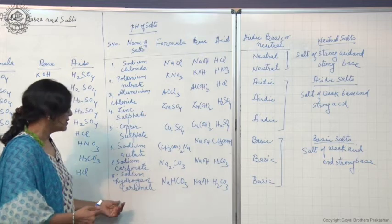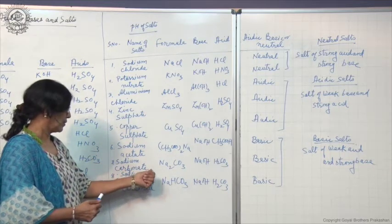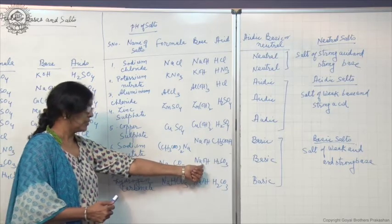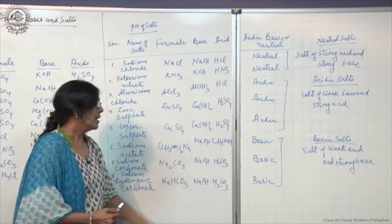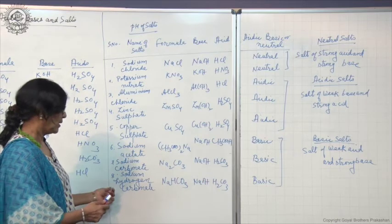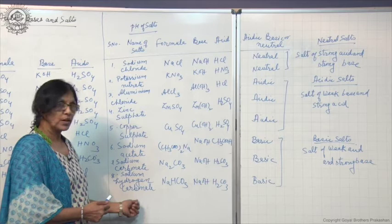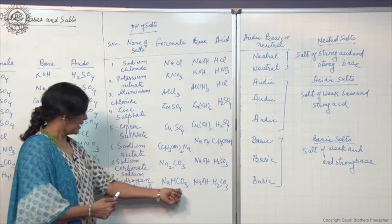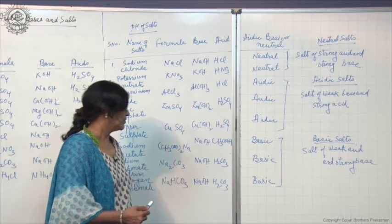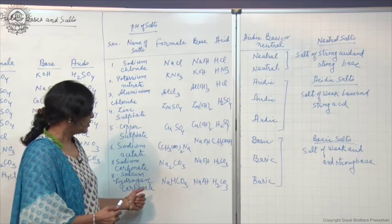Sodium acetate is a basic salt formed by the combination of weak acid and a strong base. More examples of basic salts: sodium carbonate, formula Na₂CO₃, formed from strong base NaOH and weak acid H₂CO₃ (carbonic acid) — it is basic in nature. Sodium hydrogen carbonate (baking soda), formula NaHCO₃, also formed from NaOH and weak acid H₂CO₃ — this is also basic in nature.